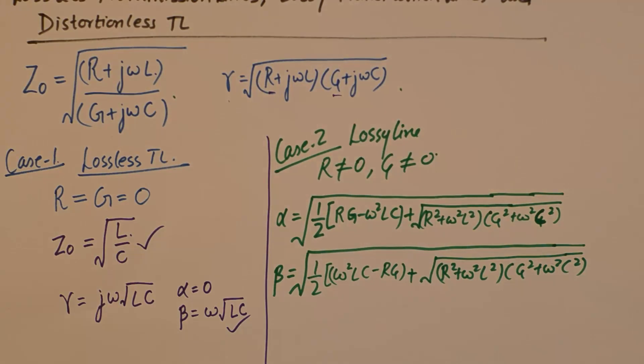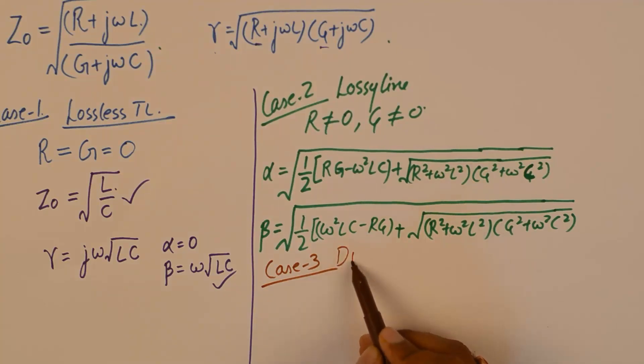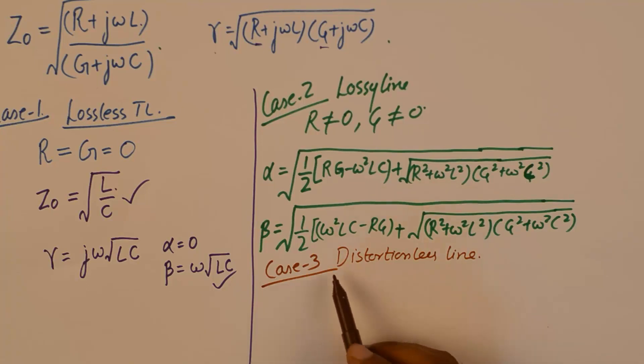Finally, we are left with the condition of the distortionless transmission line. Case 3 would be distortionless line.